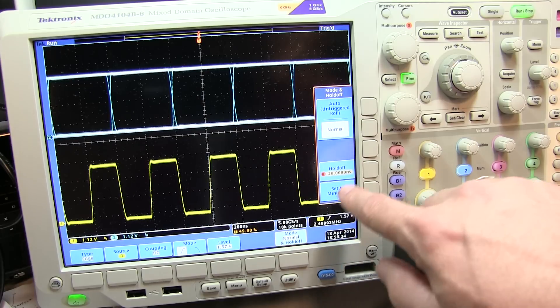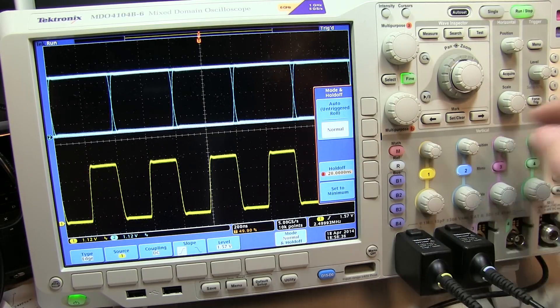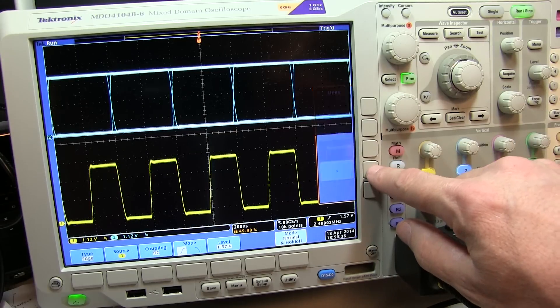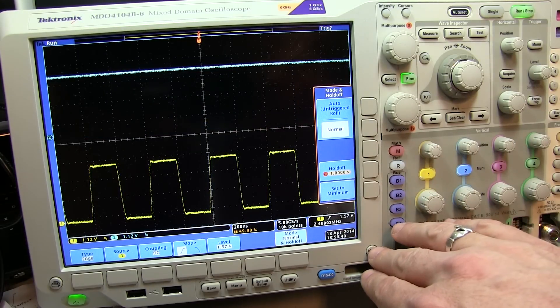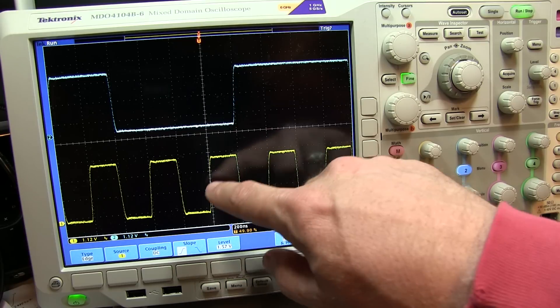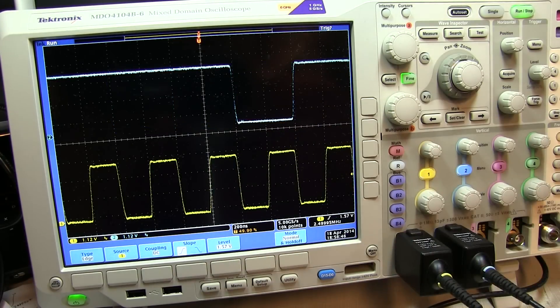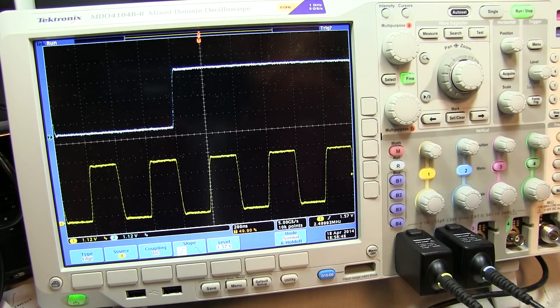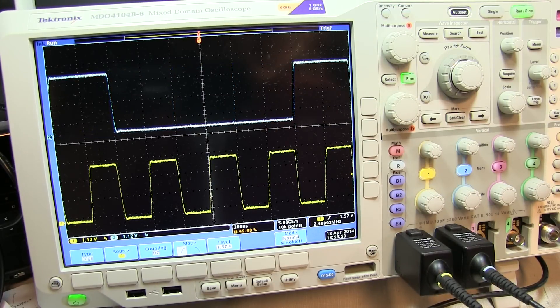Go into the trigger menu and adjust the hold off to some large value, let's say like one second. And so now the scope is only going to arm and trigger every second, and you can see that each time we trigger on the rising edge of this clock that I'm basically grabbing pulses at a different point in time.